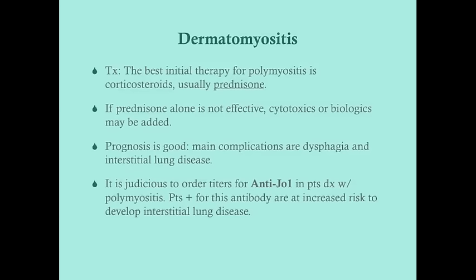Treatment for dermatomyositis is the exact same as for polymyositis: prednisone first, with cytotoxics or biologics added if prednisone is not effective alone. Prognosis is good. Dysphagia and interstitial lung disease are the major complications, just like polymyositis. Order anti-Jo-1 in patients with polymyositis or dermatomyositis because it's a risk factor for interstitial lung disease.